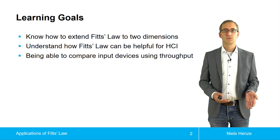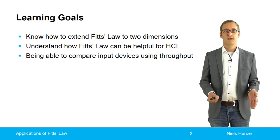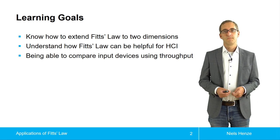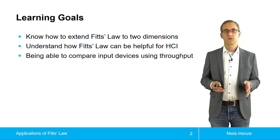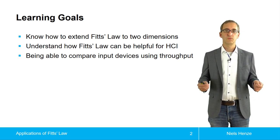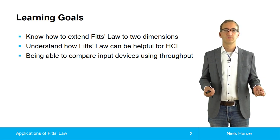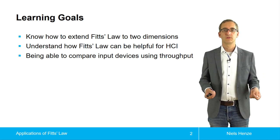Fitts' law can be used to figure out how long it takes to select targets, but the original study has only considered one-dimensional targets. So the movement only happened along one dimension, and the size of the target was only considered one-dimensional.